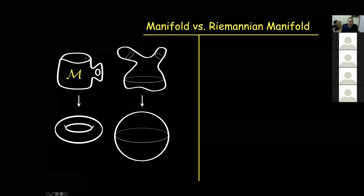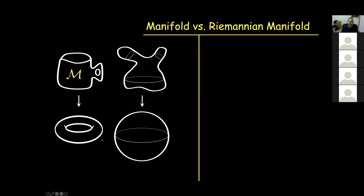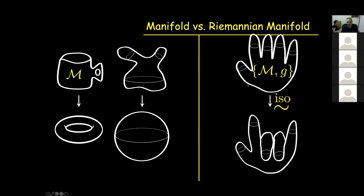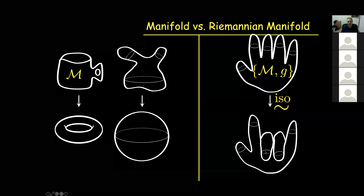What is a manifold? A cup from a topological point of view is nothing but a torus, and a sphere is nothing but a sphere. To make sense from a practical geometric point of view, you add something called the metric — a way of measuring distances on the manifold. It is called Riemannian if there is a way of smoothly transitioning between local ways of measuring distances. Two manifolds are isometric if there are no stretches or tears between corresponding points.